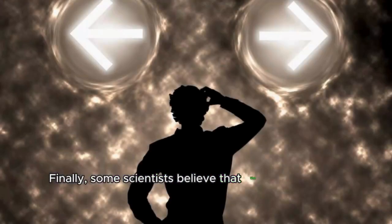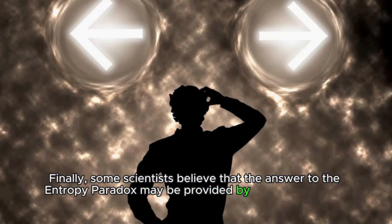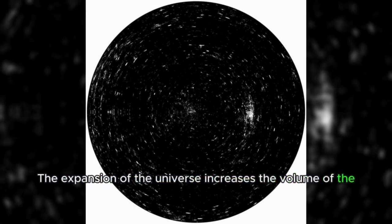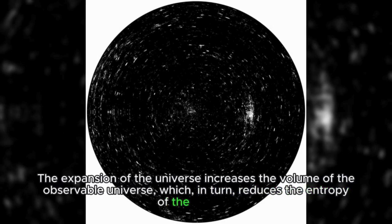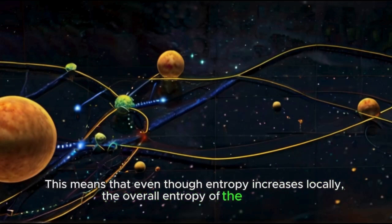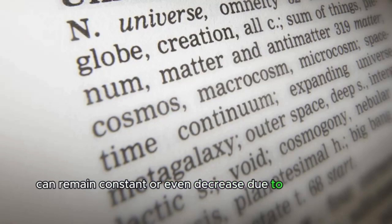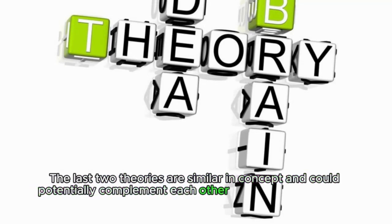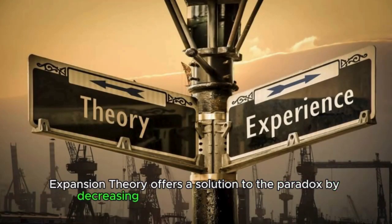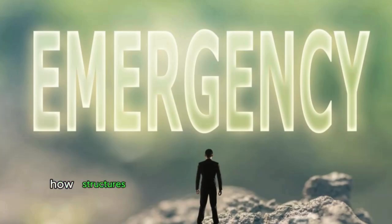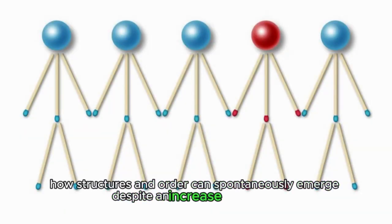Finally, some scientists believe that the answer to the entropy paradox may be provided by the expansion of the universe. The expansion of the universe increases the volume of the observable universe, which in turn reduces the entropy of the system. This means that even though entropy increases locally, the overall entropy of the universe can remain constant or even decrease due to the universe expanding. The last two theories are similar in concept and could potentially complement each other in solving the entropy paradox. Expansion theory offers a solution to the paradox by decreasing the total entropy of the system, while the emergence theory offers a solution by explaining how structures and order can spontaneously emerge despite an increase in entropy.